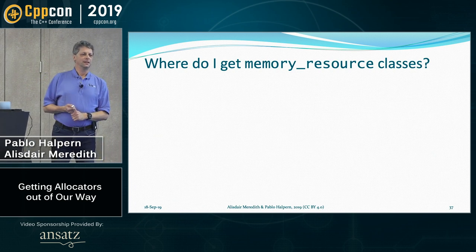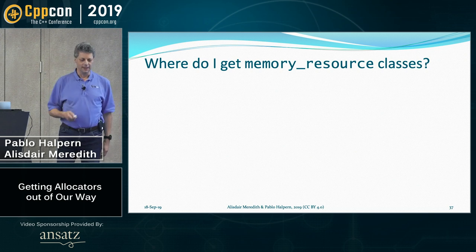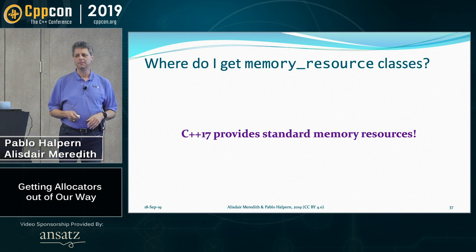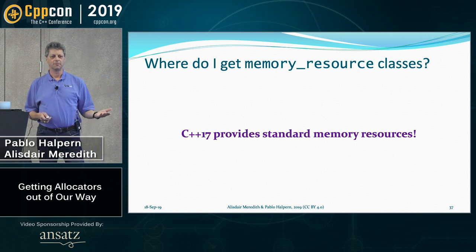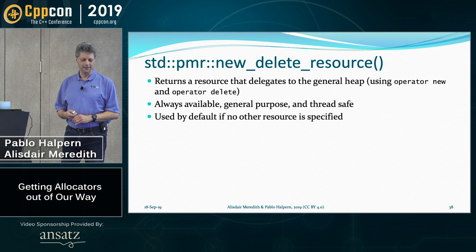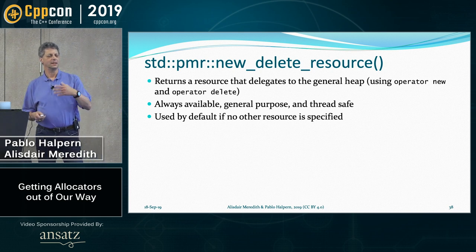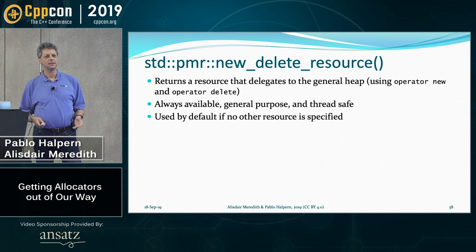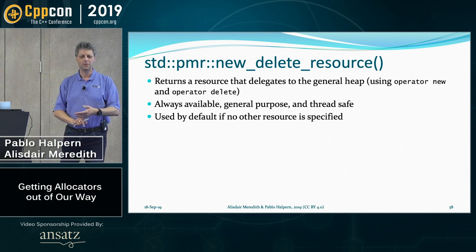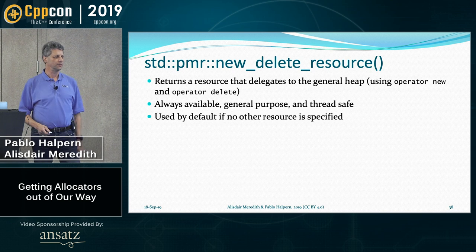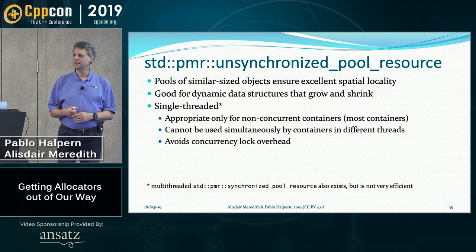So now that we have a nice little infrastructure, we need to actually create something that allocates memory. Fortunately, C++17 provides standard memory resources. The new_delete_resource is the one you get if you don't specify anything else — it just delegates to operator new and operator delete. It's always available, general purpose, and thread safe. Simply ignore all of this if you don't need the performance or other benefits from allocators — you'll just get new and delete, which is what you've always been getting.